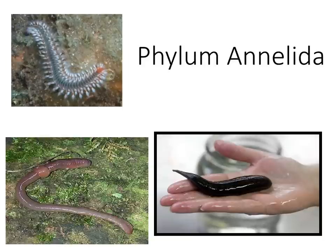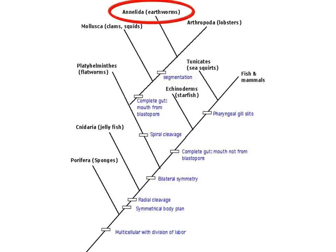Now we begin our Phylum Annelida. This incorporates earthworms, leeches, and polychaete worms. You should have your outline note packet in front of you. There is a diagram that you will be labeling, so pay attention to the slides so that you'll be able to label all the parts. It will be very helpful if you get them labeled before we do the dissection in class — it will help you understand where things will be located. You can see in our evolutionary tree they are more advanced than our flatworms, roundworms, and mollusks because now segmentation has evolved.